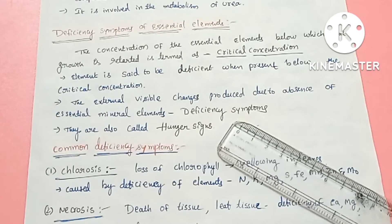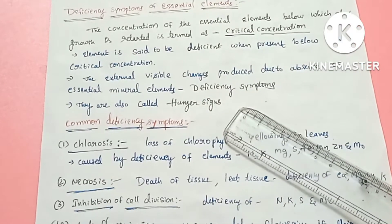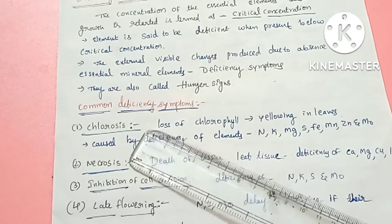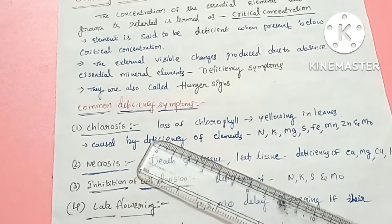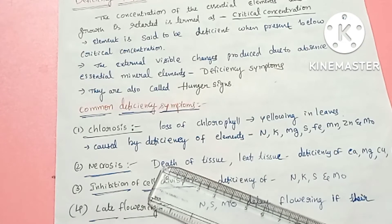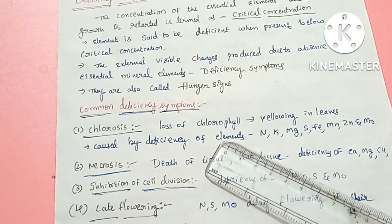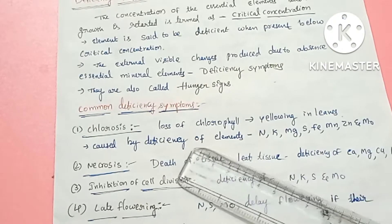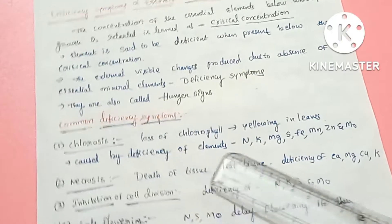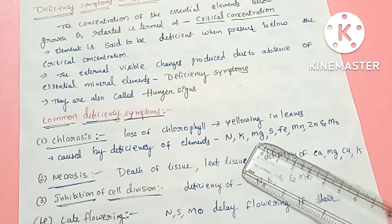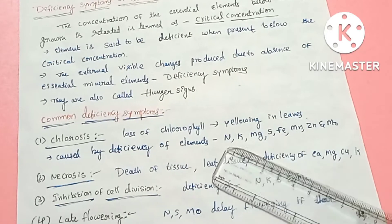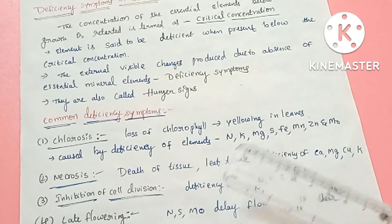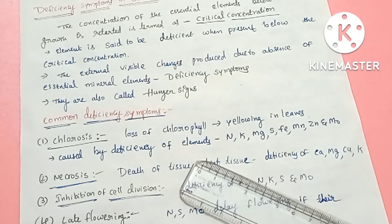Hunger signs are common for plants showing deficiency symptoms. The first deficiency symptom is chlorosis. Chlorosis means loss of chlorophyll, which is the green color pigment, resulting in yellow color spots on leaves. Elements whose deficiency causes chlorosis include nitrogen, potassium, magnesium, sulfur, molybdenum, manganese, iron, and zinc.